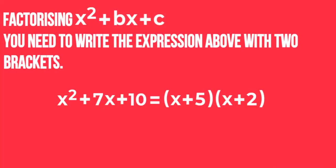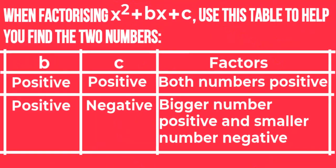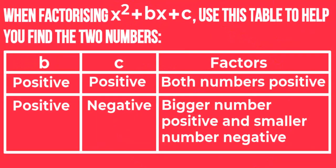Factorizing x squared plus bx plus c. You need to write the expression with two brackets. When factorizing x squared plus bx plus c, use this table to help you find the two numbers.